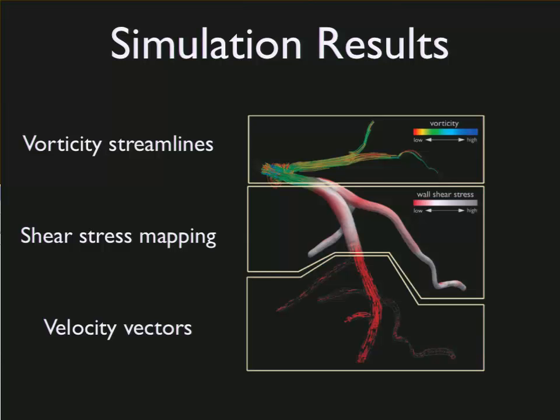The results of our simulations are things like this, where we can look at the vorticity streamlines, the shear stress mapping, velocity vectors, and really try to analyze the fluid flow and the interactions with the walls to identify regions that are at risk.